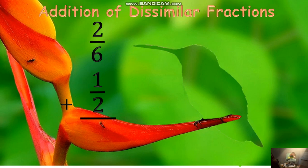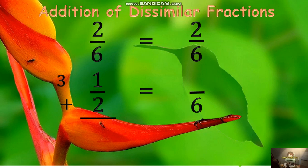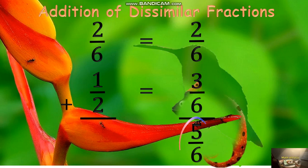First, we need to rename the dissimilar fractions to make them similar. To do this, we will find the LCD of 2 sixths and 1 half, which is 6. Divide 6 by 6 equals 1, multiplied by the numerator 2 equals 2. Then, 6 divided by 2 equals 3, times the numerator 1 equals 3. We can now add 2 sixths and 3 sixths by adding their numerators: 2 plus 3 equals 5, then copy the common denominator 6. Therefore, our answer is 5 sixths.